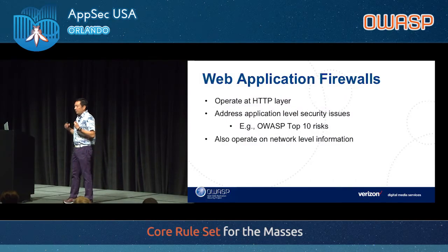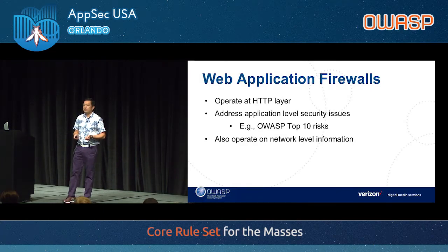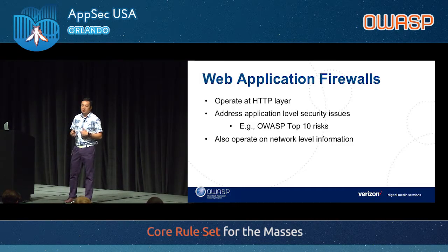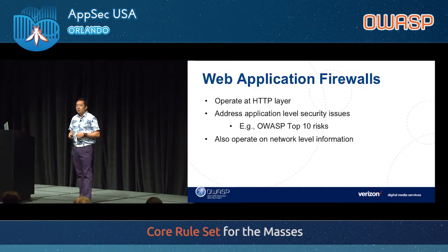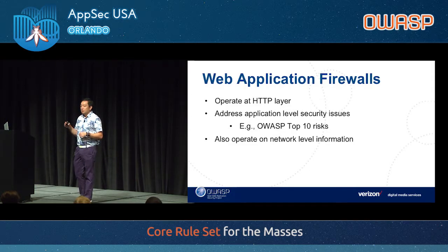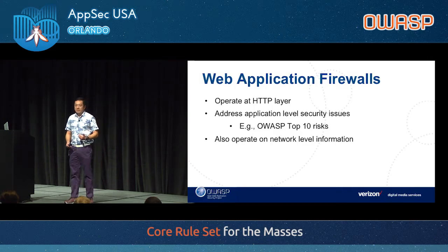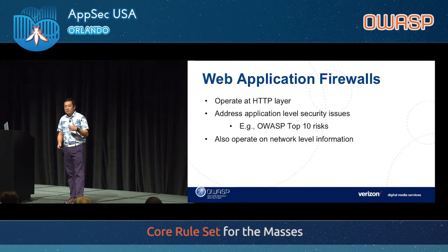A little bit about what a WAF is, because different vendors may have different definitions. The most authoritative document on what a WAF is and how to evaluate one is an OWASP document called the WAF Evaluation Criteria, still at version 1.0 — it's in need of being updated, and 2.0 is in progress. The characteristics of a WAF include that it operates at the HTTP layer and can see HTTP transactions, requests and responses, all the headers, content, params, and so on.